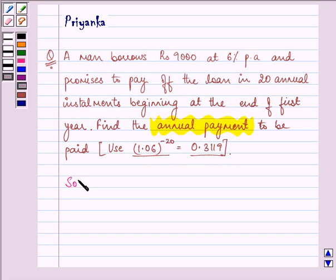Now let us start the solution by writing down whatever is given to us. Here we are given V as rupees 9000.